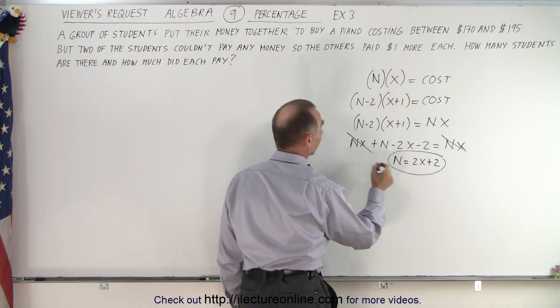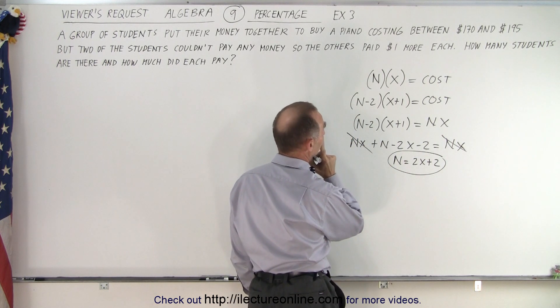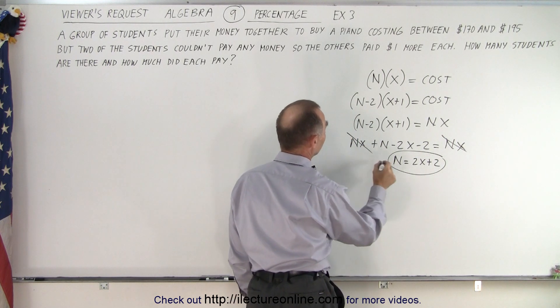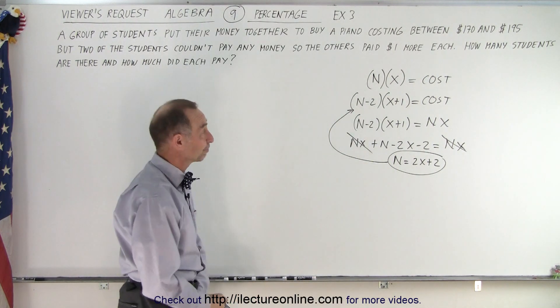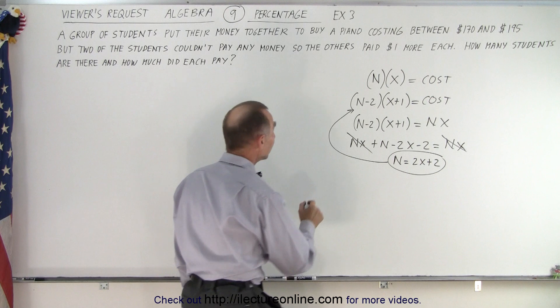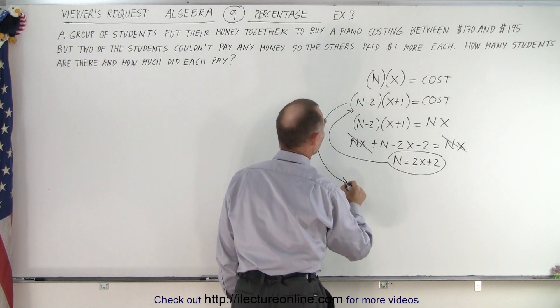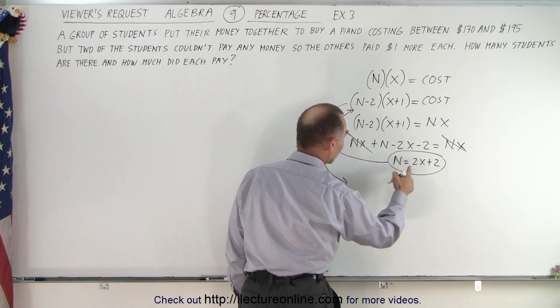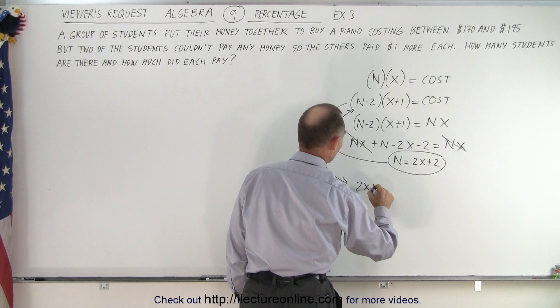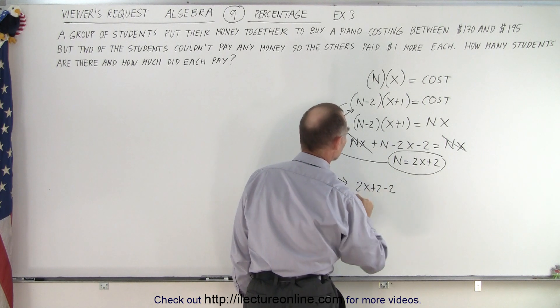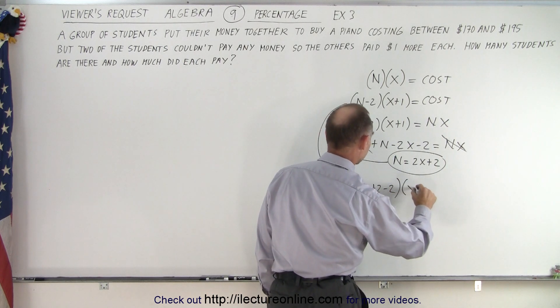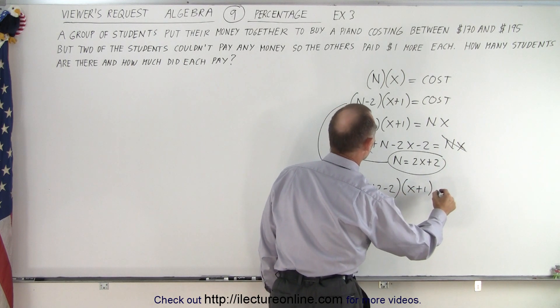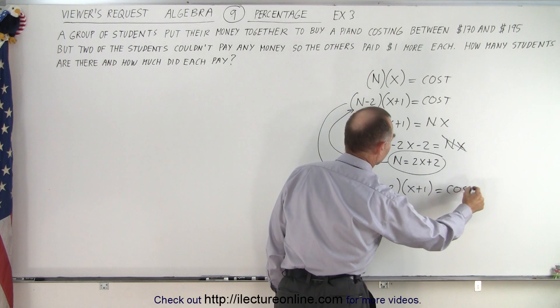And then we can plug that into one of our equations. Which equation should we plug that into? Well, let's try to plug it into this equation right there and see what happens. That means that we can now write that instead of n, we're going to write 2x + 2 - 2 multiplied times x + 1.